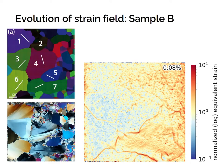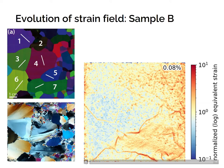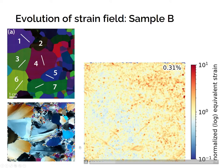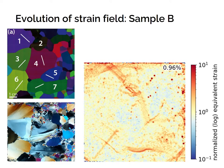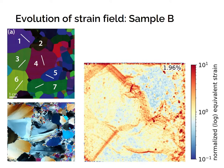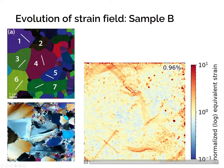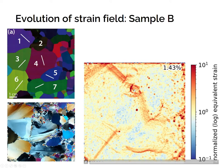Let us now focus on the evolution of the strain field for sample B in the weakening stage. The first thing to note is that at the very beginning, the strain localizes in the vicinity of almost all grain boundaries. This is, however, a transitory phenomenon that disappears quickly. Then, strain begins to concentrate in a few shear bands that eventually spread over multiple grains. Also note that a crack occurs in grain number 2 after the development of the shear bands, when macroscopic shortening was about 1.4%.